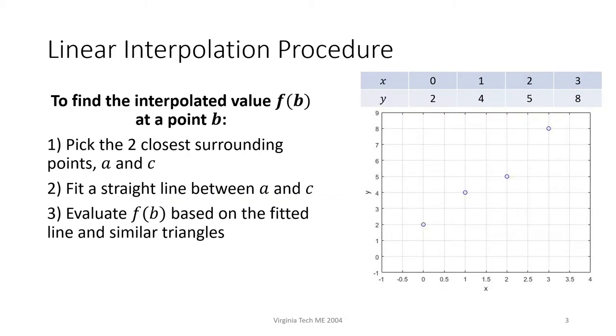You can find the interpolated value f(b) at a point b within a dataset in three steps. First, we pick the two closest surrounding points to b. I'll call them a and c. Next, we fit a straight line between a and c. Finally, we evaluate f(b) from similar triangles.